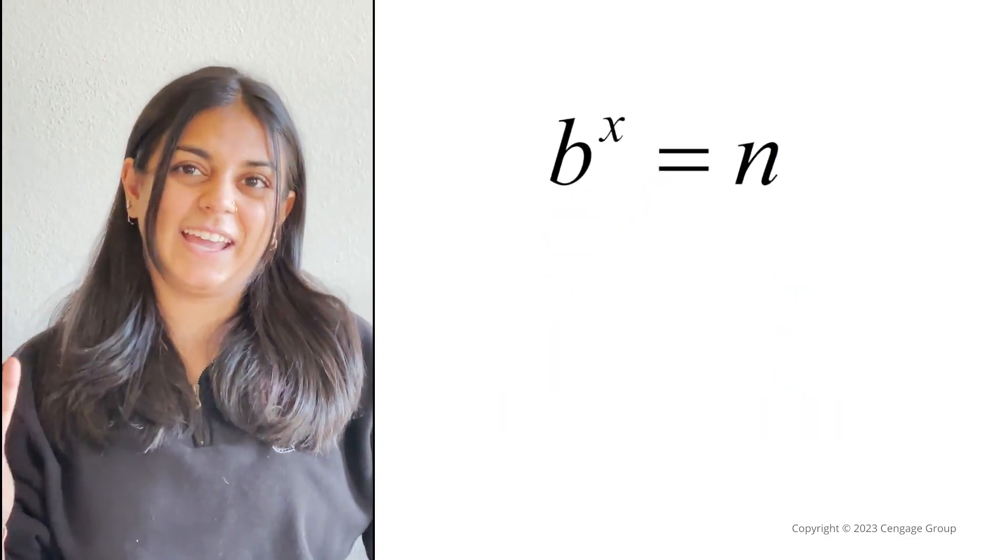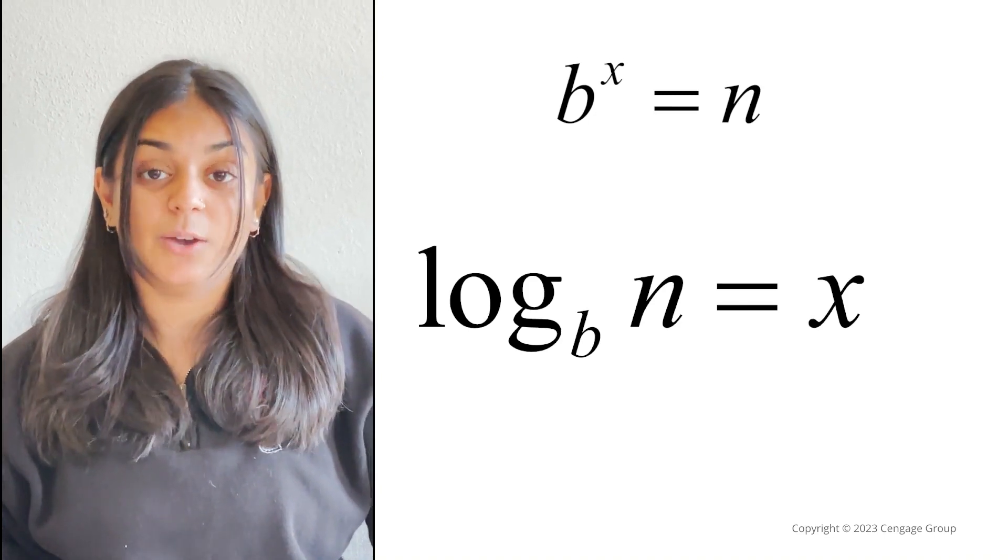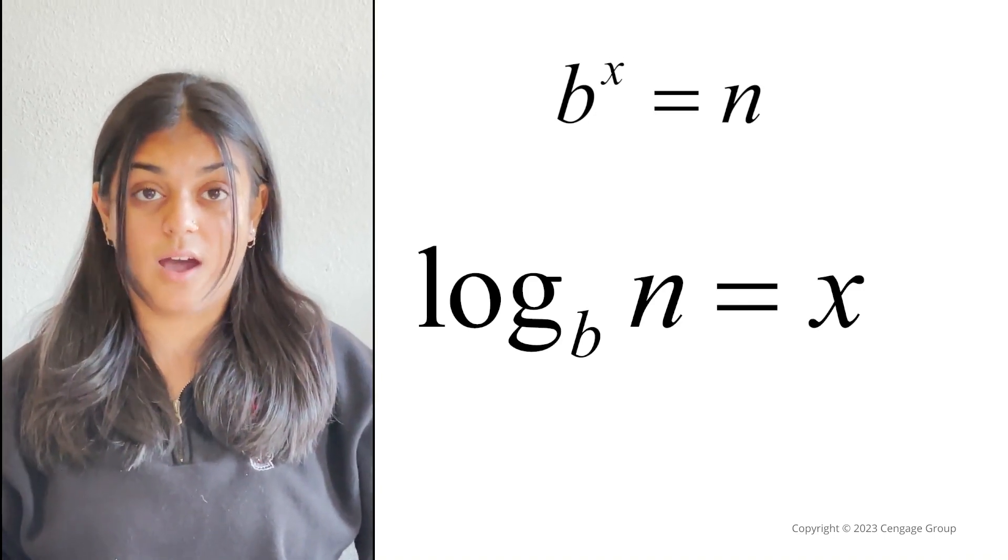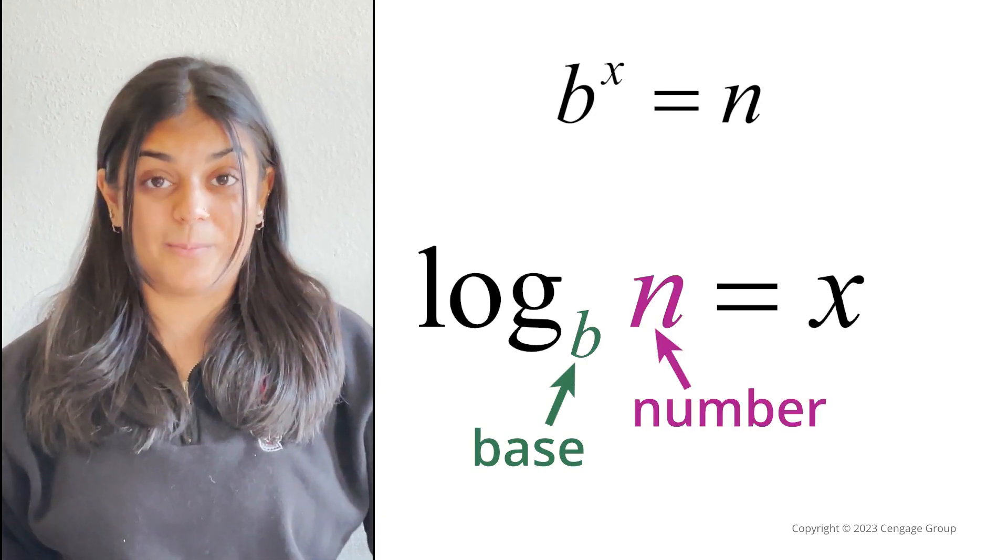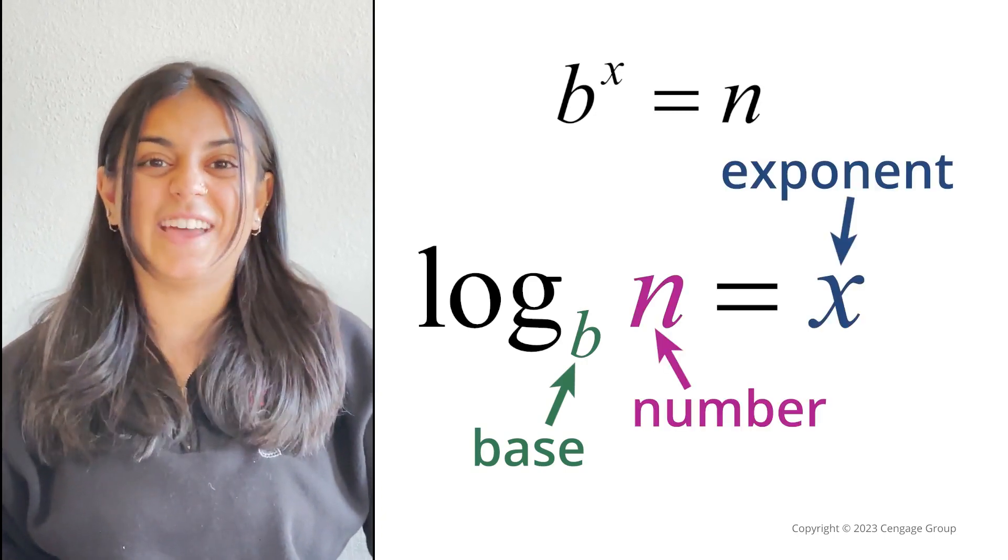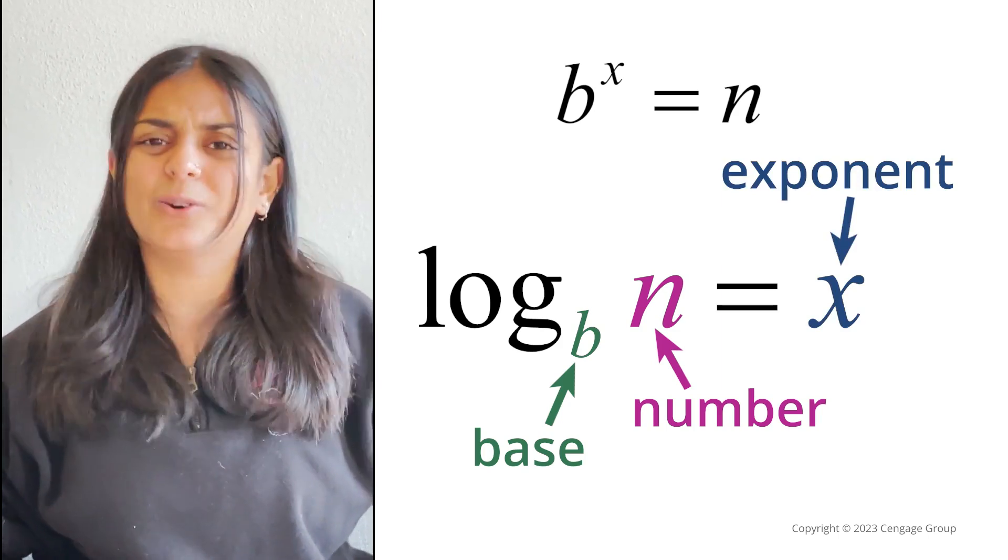These three same numbers appear in logarithmic form of the same equation. We have log, or log for logarithm, with base b of the number n is equal to the exponent. The exponential form and the logarithmic form are equivalent equations.